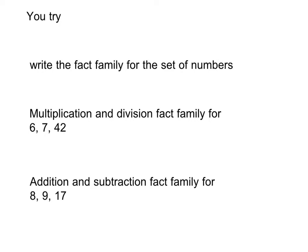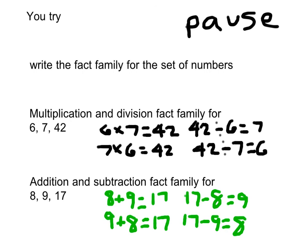It's your turn to try. Write the fact family for each set of numbers: 6, 7, and 42, and also 8, 9, and 17. You should end up with 4 equations for each. Go ahead and hit pause. You should have ended up with 4 equations for each of those fact families. Here is the fact family I'm circling for 6, 7, and 42.